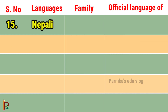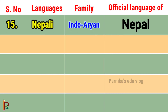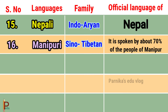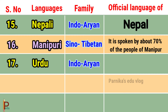Language Manipuri belongs to the Indo-Orient family and it is spoken by about 70% of the people of Manipur. Language Urdu belongs to the Indo-Orient family and is the official language of Jammu and Kashmir.